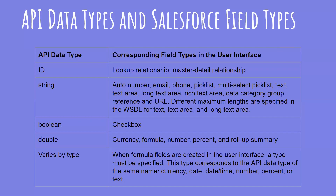For a Boolean, Salesforce provides a checkbox field. For a Double, it may be currency, formula, number, percentage, or roll-up summary. When a formula field is created in Salesforce, a type must be specified — this corresponds to the API data type of the same name, such as currency, date, datetime, number, percent, or text. We will study more about formula fields in a later section.